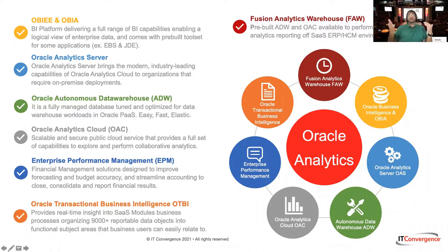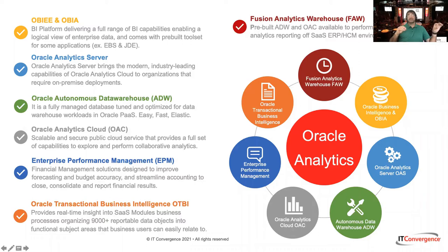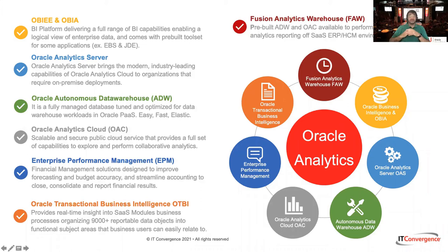The last piece of the Oracle Analytics portfolio is something pretty new — it was called OAX and then renamed to FAW, Fusion Analytics Warehouse. Think of it as the combination of the cloud technical components I mentioned, ADW and OAC. It's the evolution of Oracle Business Intelligence Applications: a pre-built product with pre-built extractors, a pre-built repository, pre-built dashboards and reports built for Fusion Applications — but it can also be extended to other products. This is the umbrella of products I'll be discussing today.